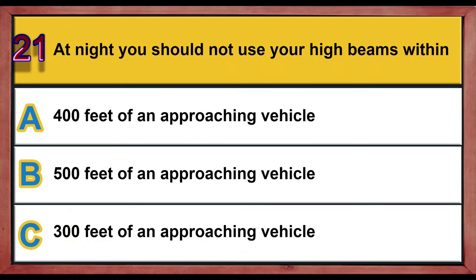Question 20. At night, you should not use your high beams within: A. 400 feet of an approaching vehicle. B. 500 feet of an approaching vehicle. C. 300 feet of an approaching vehicle. Correct answer is B: 500 feet of an approaching vehicle.